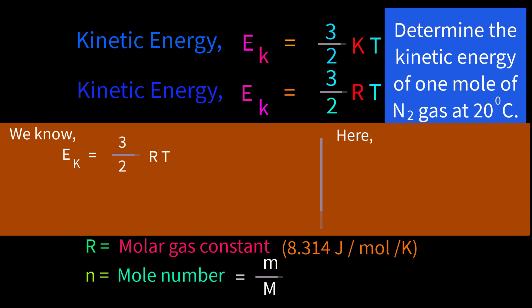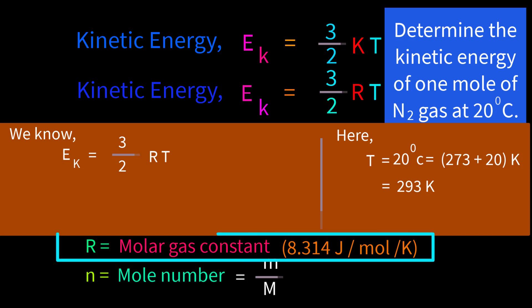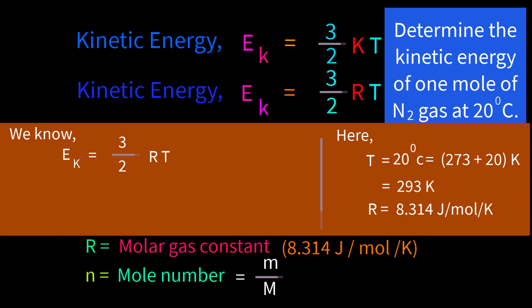Temperature T equals 20 degrees centigrade equals 273 plus 20 kelvin, equals 293 kelvin. Molar gas constant R equals 8.314 joule per mol per kelvin. So we can write Ek equals 3/2 times 8.314 times 293. Therefore Ek equals 3654 joule. This is the answer for this problem.